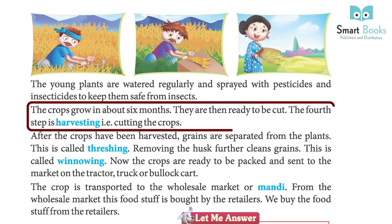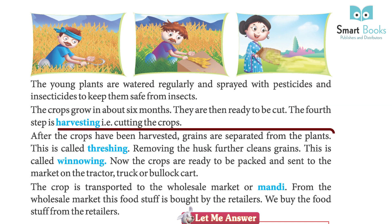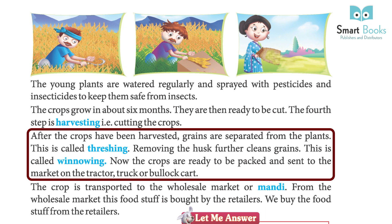The crops grow in about six months and are then ready to be cut. The fourth step is harvesting — that is, cutting the crops. After the crops have been harvested, grains are separated from the plants. This is called threshing. Removing the husk further cleans the grains, and this is called winnowing.